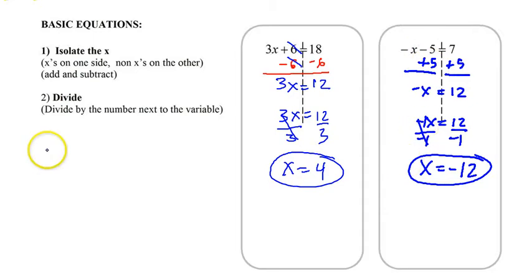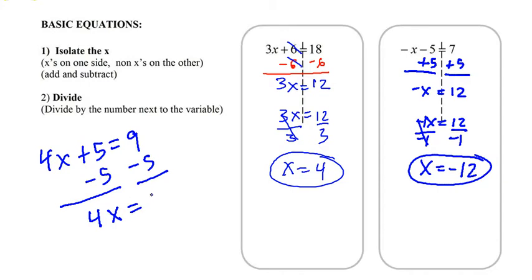Here, I'll give you one more. 4x plus 5 equals 9. So we subtract first. Remember, we focus on the x side. So there's a 5 and a 4. We subtract the 5 away. So that gives us 4x equals 4. And then we divide by 4. So x equals 1. And that's it. That's our pattern. And that's what you want to do.